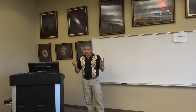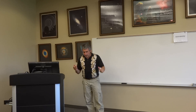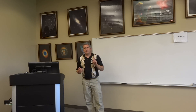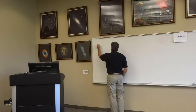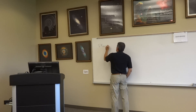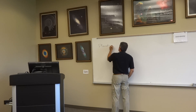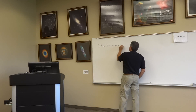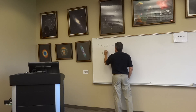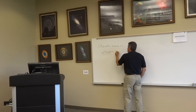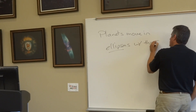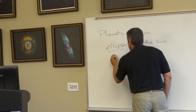Now, that motion — again, in the Copernican model — was circles. Kepler says he can do a little bit better than that. From his observations, he recognized that planets move in ellipses with the sun at one focus.